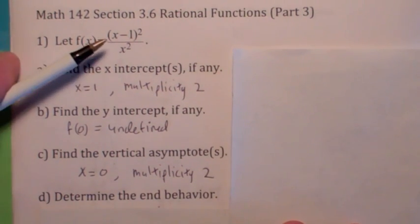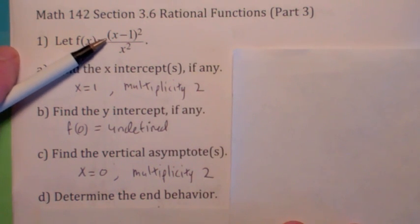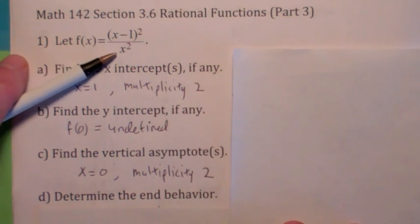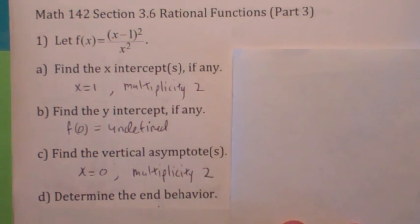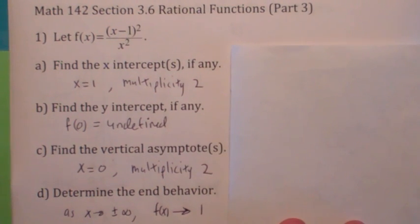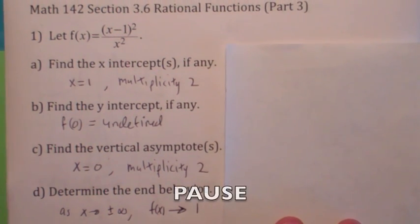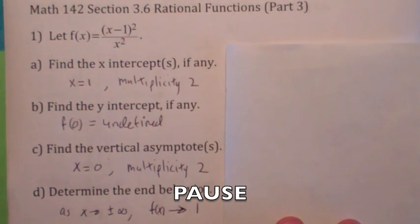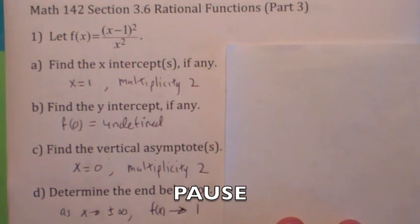Since the top and bottom have the same degree, it looks like it's going to be x squared over x squared — in other words, it's going to get close to 1. So when you put it all together, see if you can sketch the graph. Go ahead, hit the pause button, see if you can fit all those pieces together and sketch a graph of a function that satisfies all those properties.